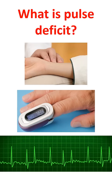Ideally, both heart rate and pulse rate have to be counted simultaneously to document pulse deficit. An ingenious way in the monitored setting would be to check the difference between the heart rate display from the ECG tracing and that from the pulse oximetry tracing, though it cannot be accepted as a formal clinical method.